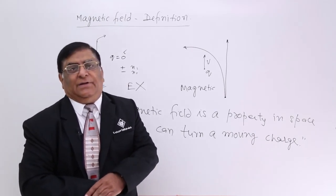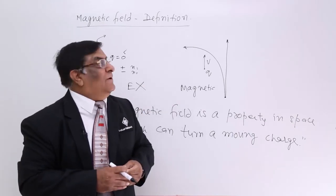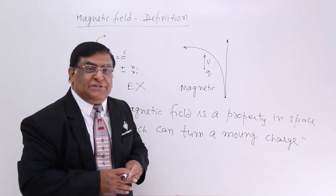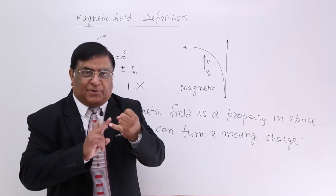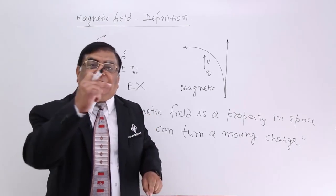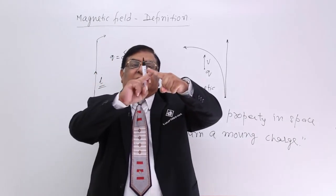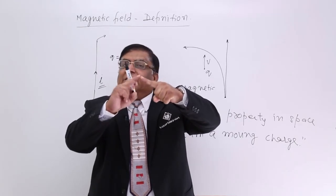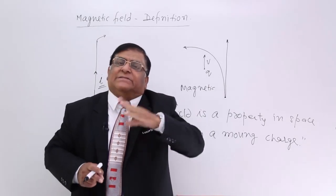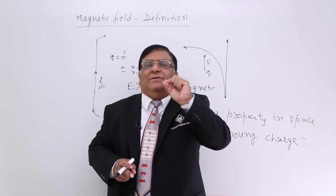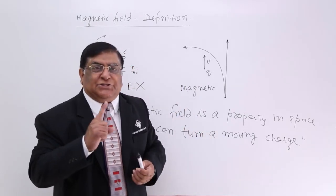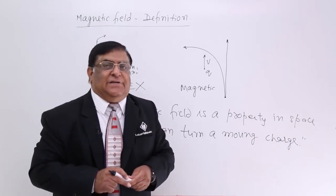Now we will quantify it — how much is the strength of this magnetic field, what is the intensity? We will also look at the shape of the magnetic field in the next lecture. We decide the shape by the direction of the force: whatever direction the force acts at any point, that is the direction of the field at that point. So in the next lecture we will determine the shape and the quantity — the intensity — of the magnetic field.